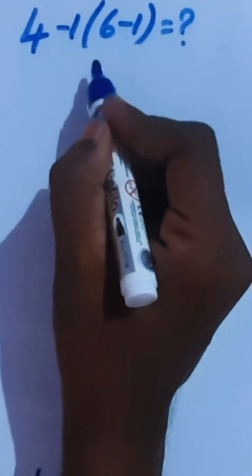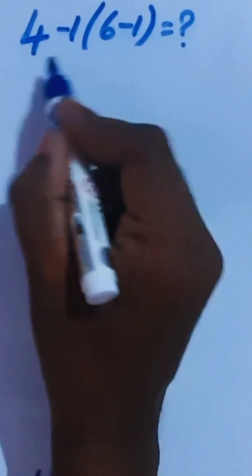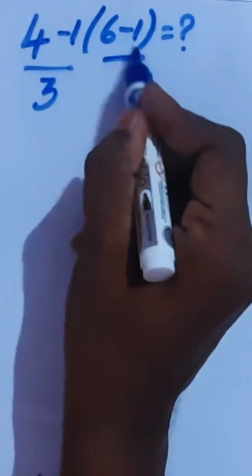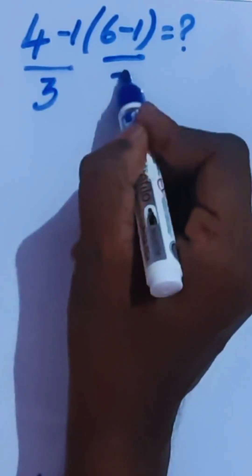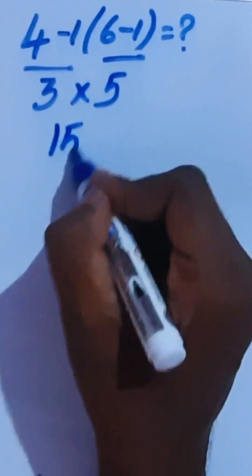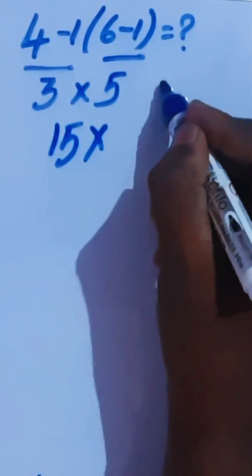Hi guys, most of them get the answer 15 for this problem in the wrong way. Here, 4 minus 1 which is 3, 6 minus 1 is 5, here 3 times 5 is 15. This is wrong.